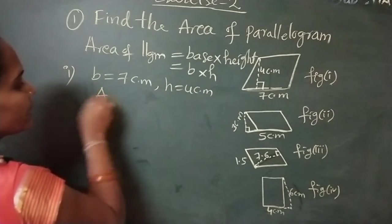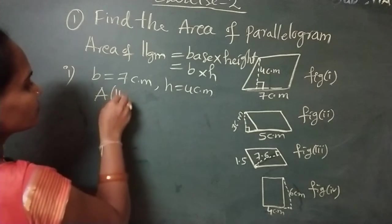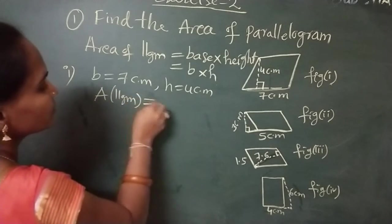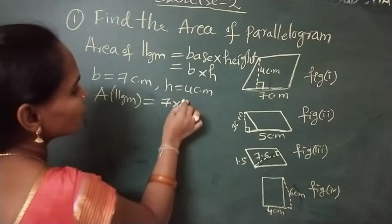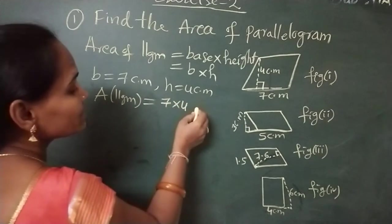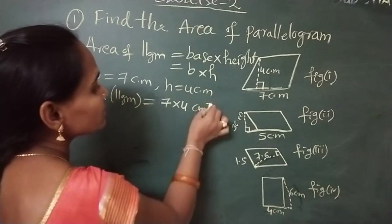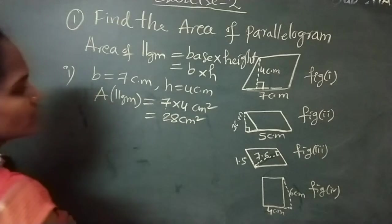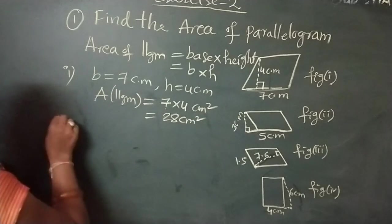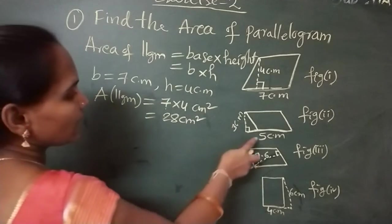Now you can substitute in this formula, so you can get the area. Area of parallelogram: base 7 centimeters and height 4 centimeters. So centimeters into centimeters is centimeters square. Now, seven fours is 28 centimeters square. This is for figure 1.